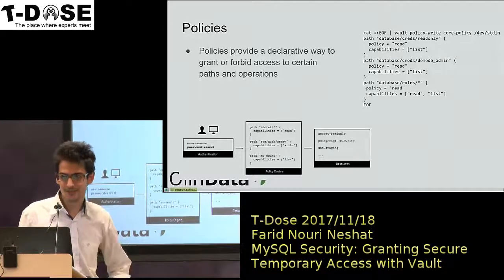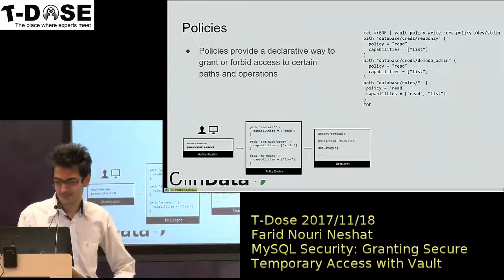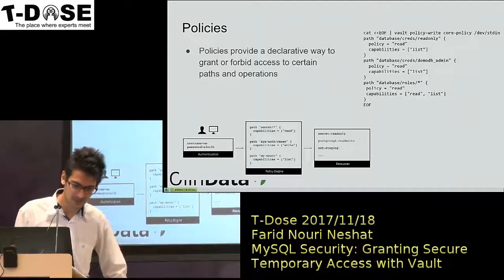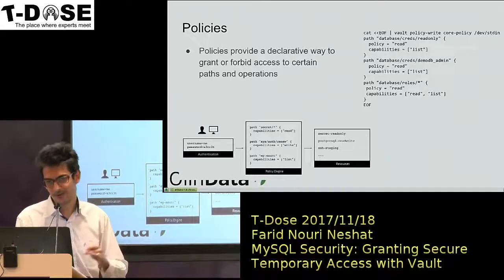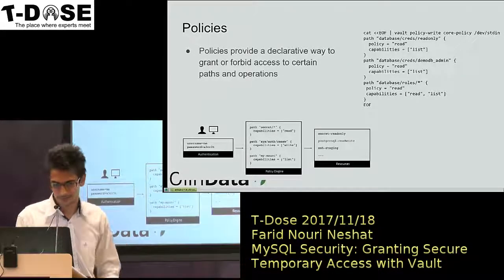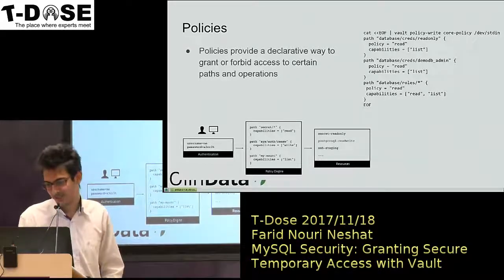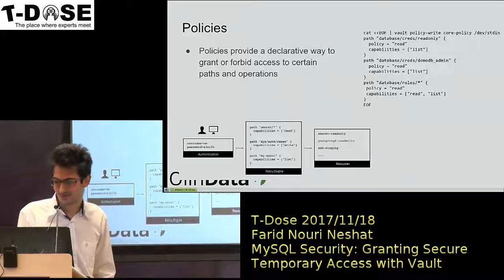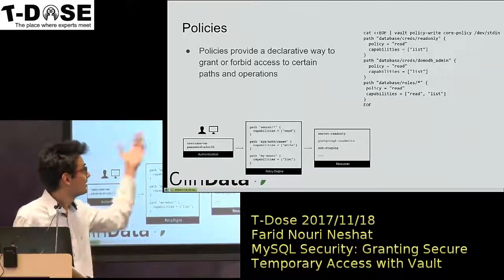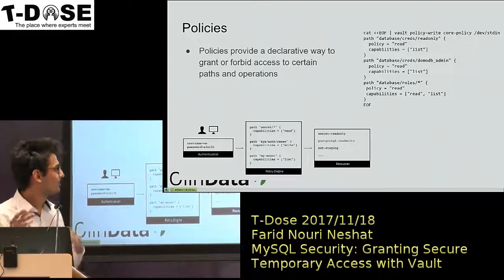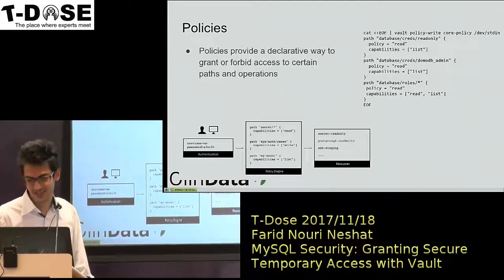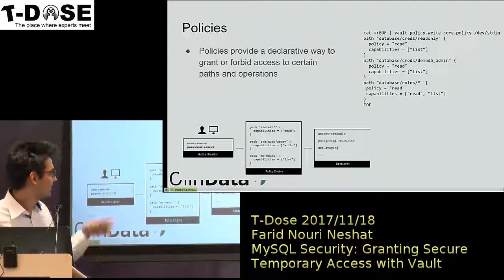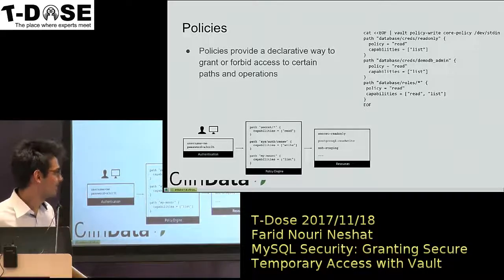You can have policies and tell users what they can read and what they cannot read. You can have some secrets readable to some users in some group, and some to, for example, new users. In this case, we're setting up Vault to give us database credentials from MySQL. We create a core policy — just for that group — and we say you have access to the read-only database, the demo DB, and you can also see what databases are available to you.